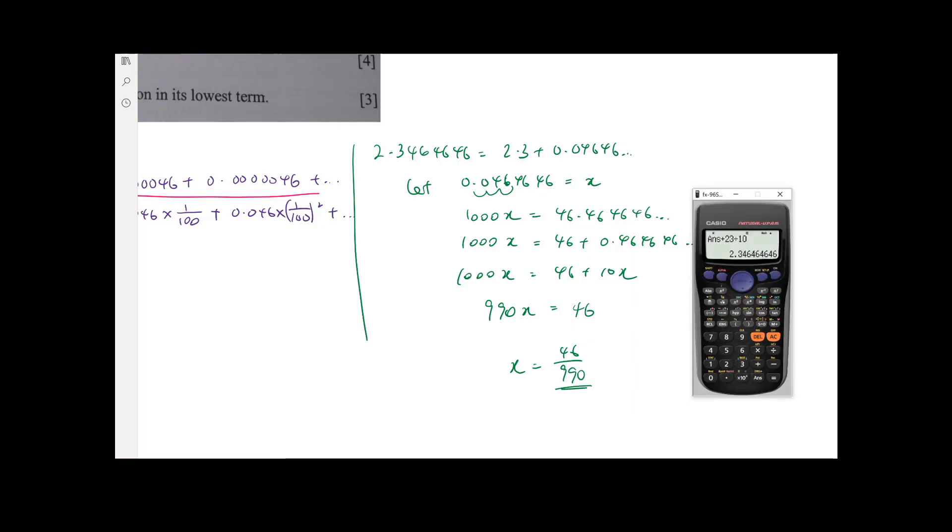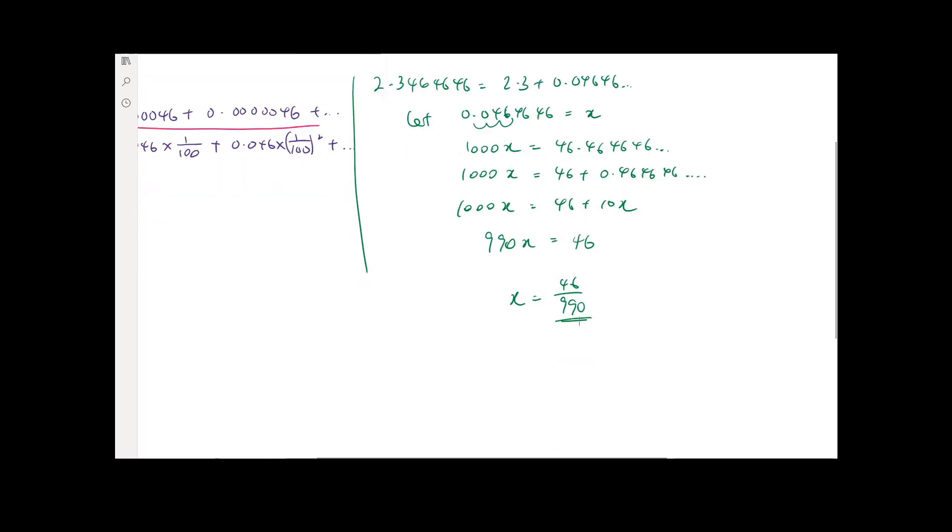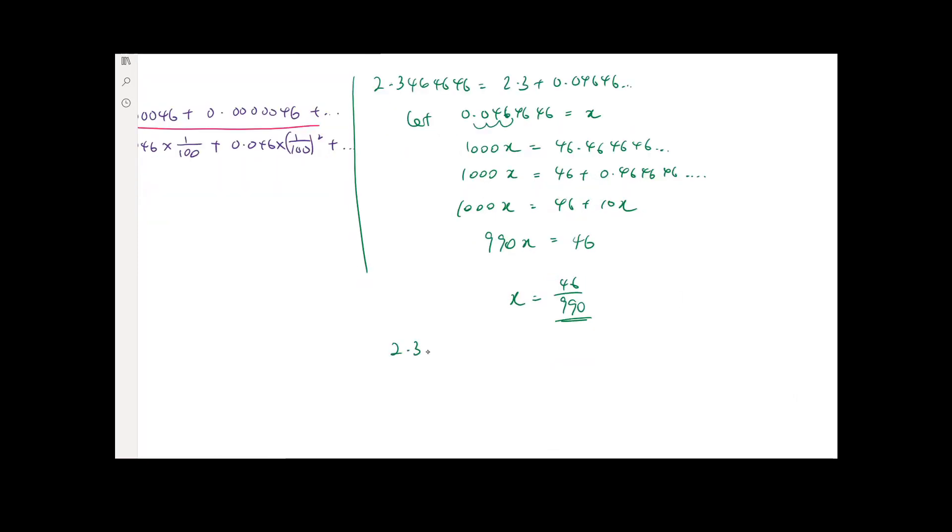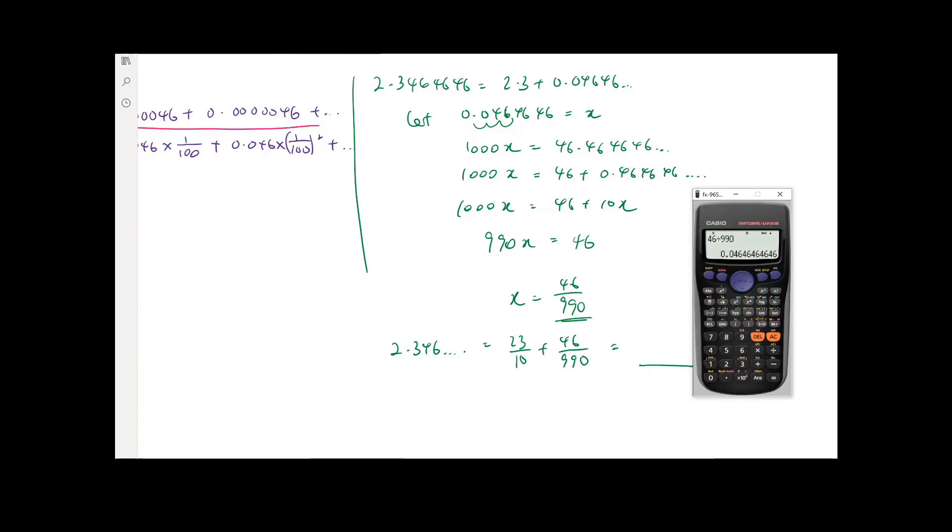And, you know what? In sec 4, you can use a calculator to solve this out, right? So, you get 96 divided by 990, and then you check this number. This is your 0, 4, 6, 4, 6, right? That's your X. Now, we are not done yet, because your answer is, your number is 2.3464646, right? So, it's 23 over 10 plus 46 over 990. 2323 over 990.